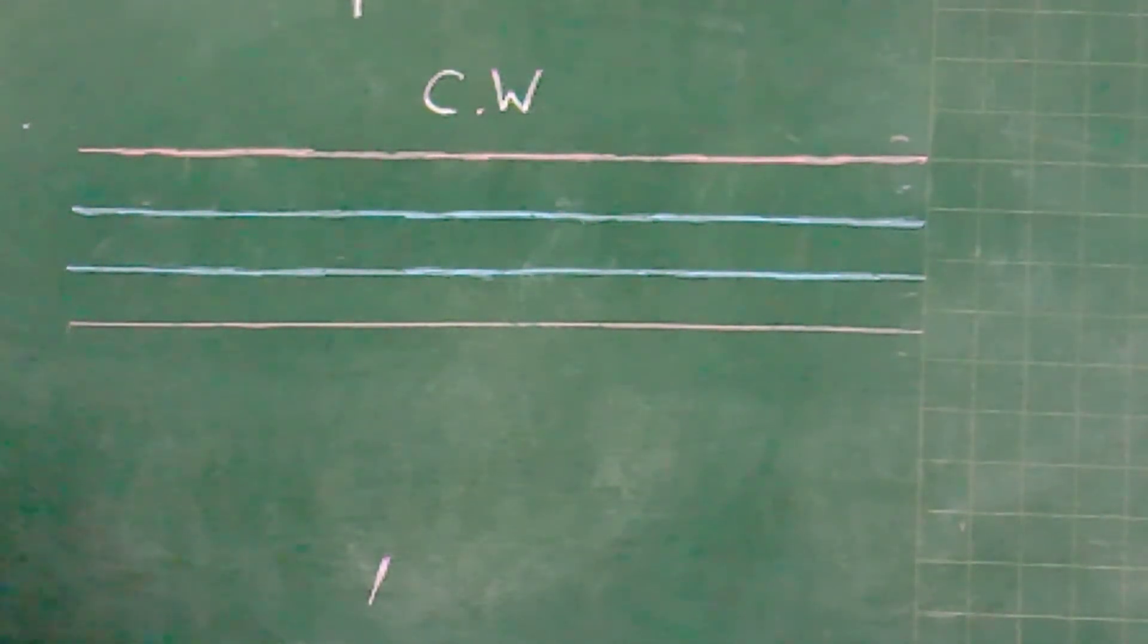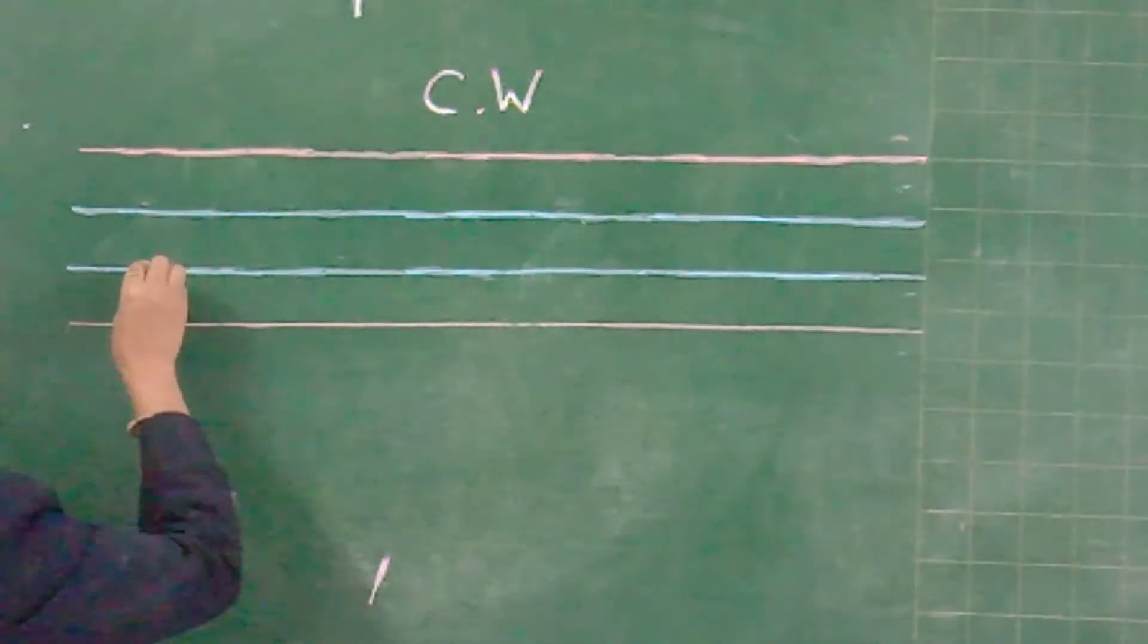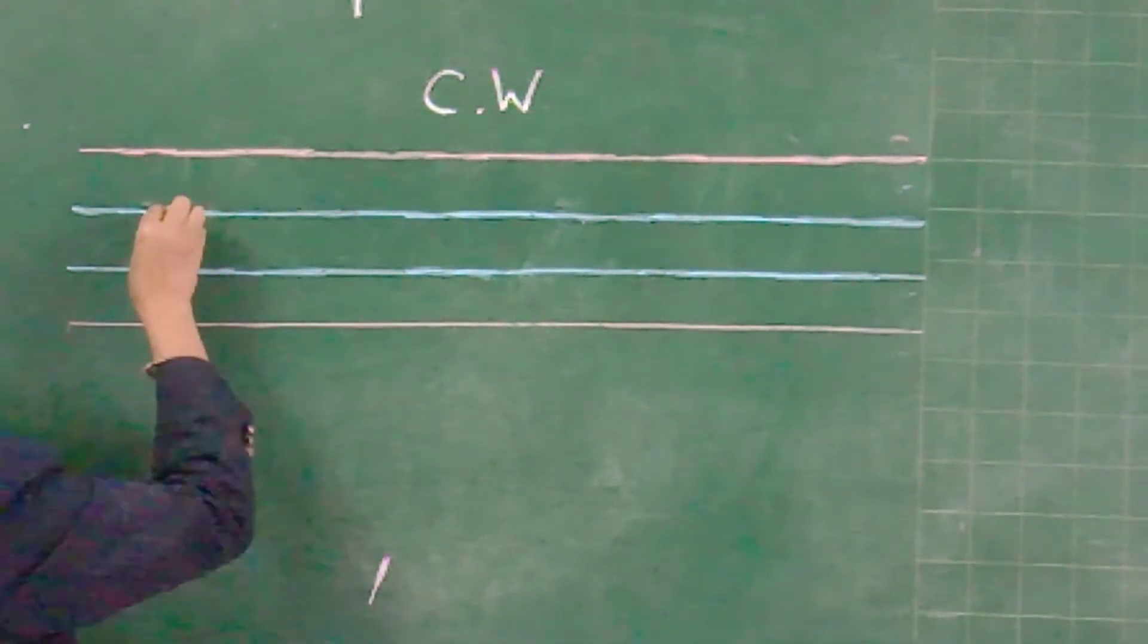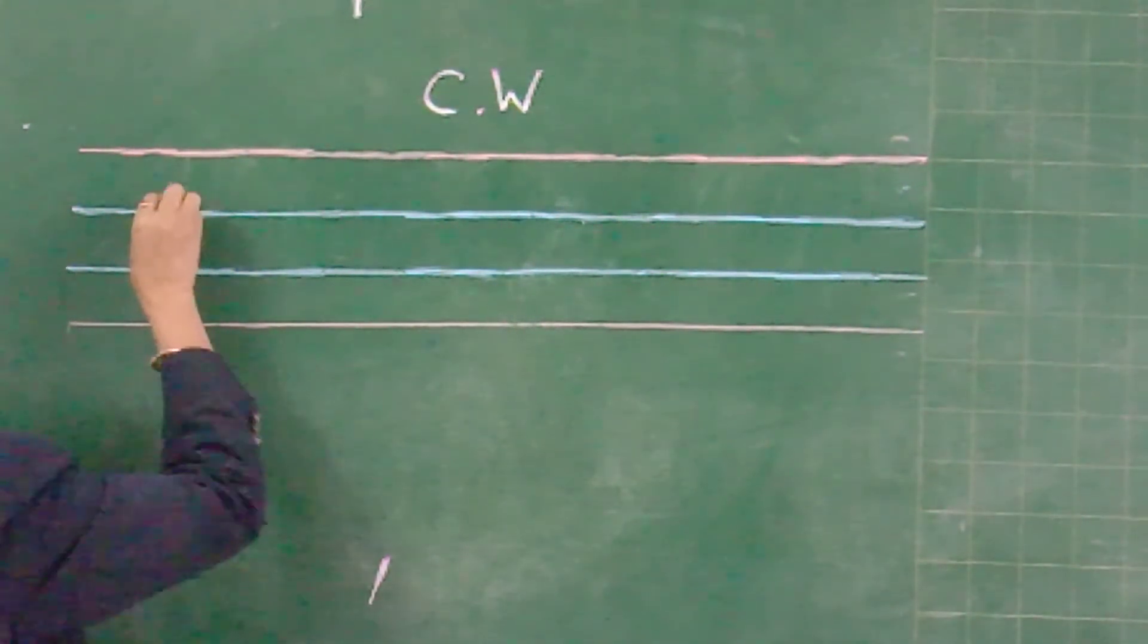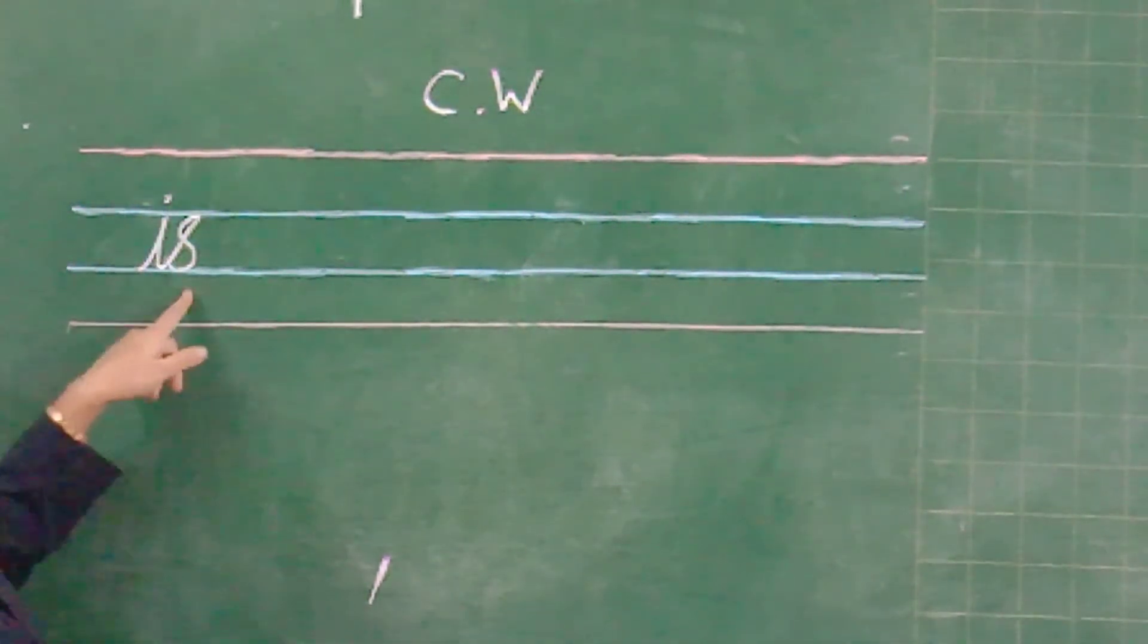Then we are going to learn how to write in cursive words. Look here. I-S. And top. I-S. Which word is this? I-S.